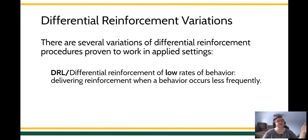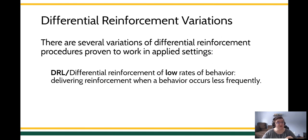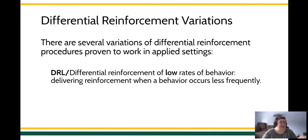You also have the opposite. You can do a DRL, where reinforcement is available but only if the target behavior is below a certain threshold. Using the same spouse example, maybe the spouse feels harangued if they receive 10 calls per day, so reinforcement is only available if they call less than 10 times per day.